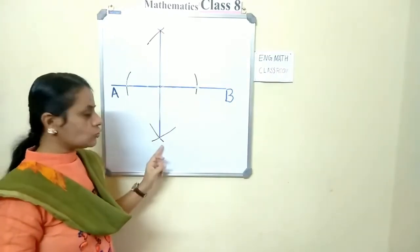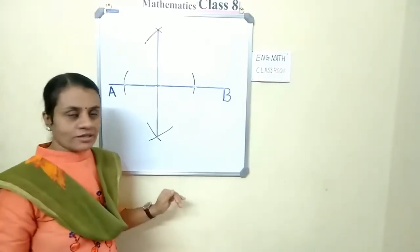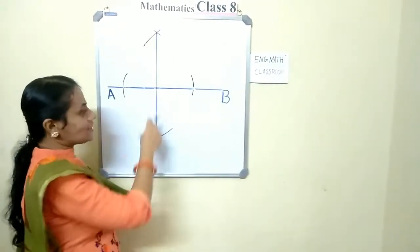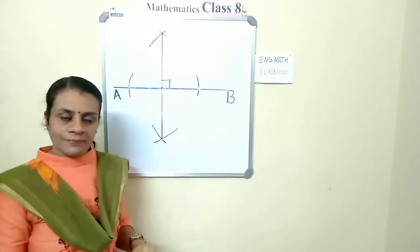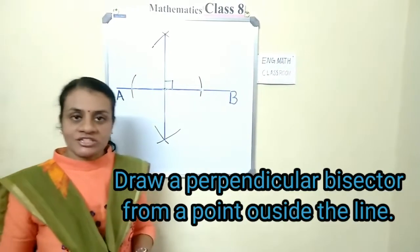Join these two intersecting points and this line will pass through the point. This will be 90 degrees.